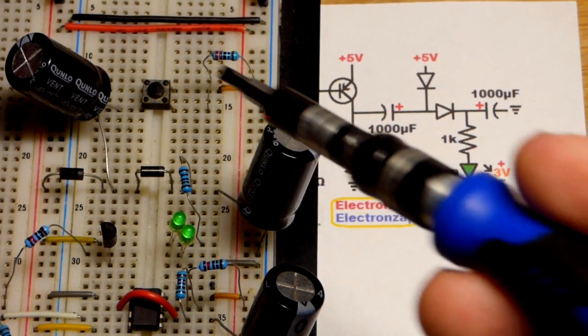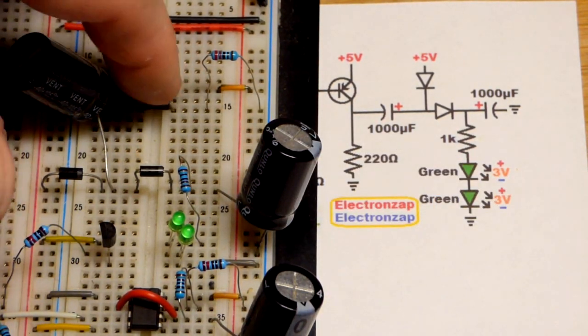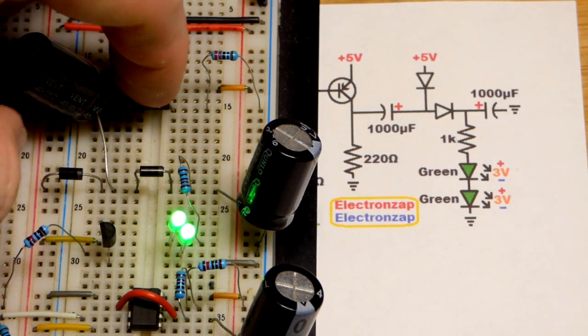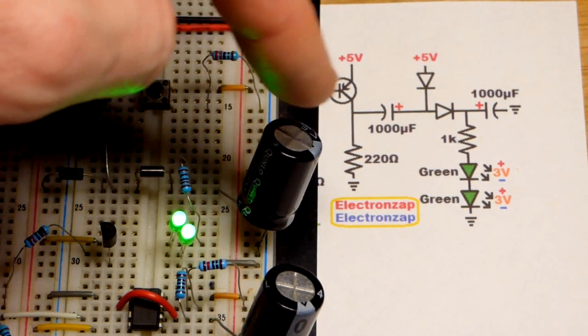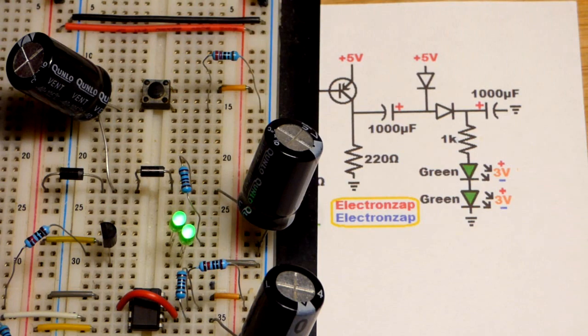So now in the last video we made this circuit here where we're using a switch with a capacitor charge pump to pump more charge into that capacitor and give it a higher voltage.